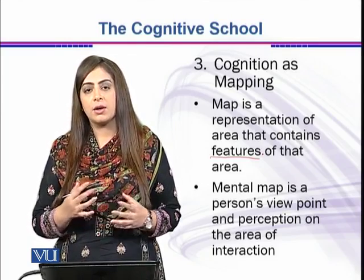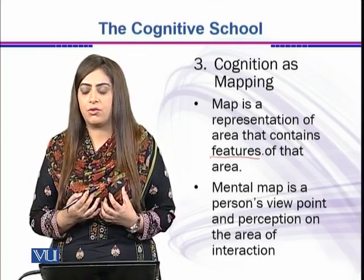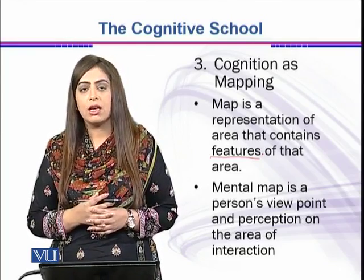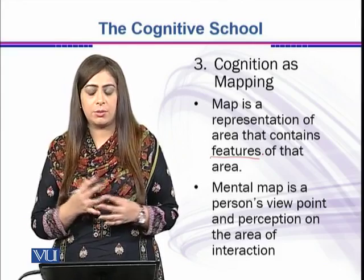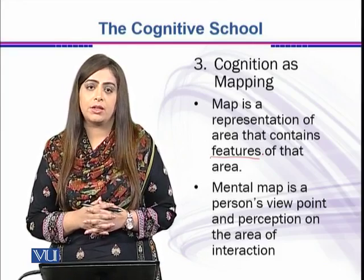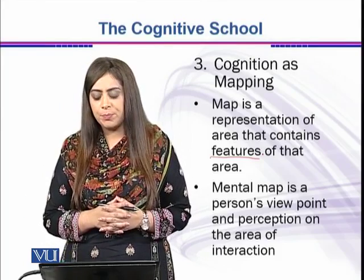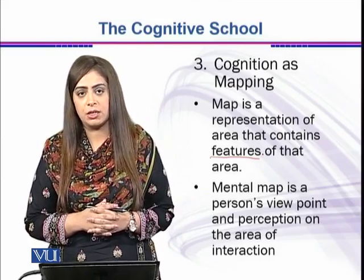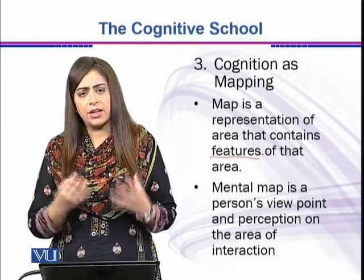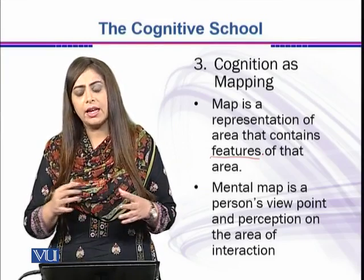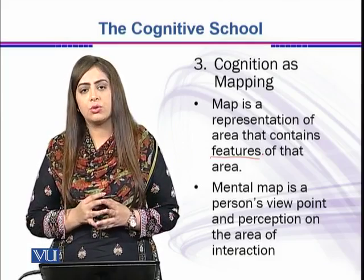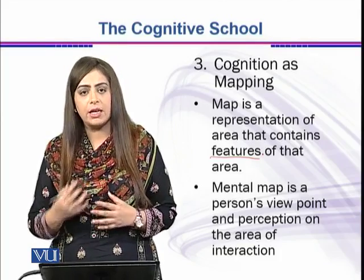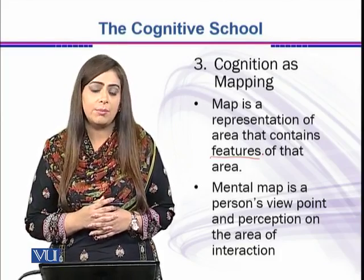Similarly, a person has a certain map inside their mind. What is a mental map? We should know the difference between the map used in geography and the mental map term used in psychology. A mental map is a person's viewpoint and perception on the area of interaction. It also has certain features. If a person has certain characteristics associated with a certain thing, they try to make a map according to the perception and characteristics they have in their mind. This is called the mental map, which is created inside the mind of a person.